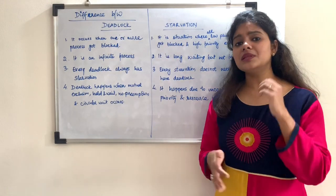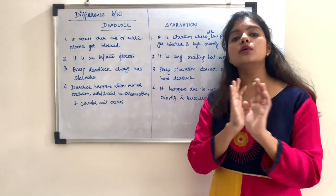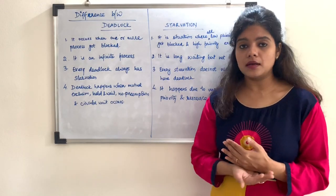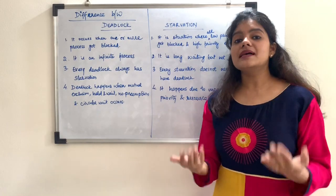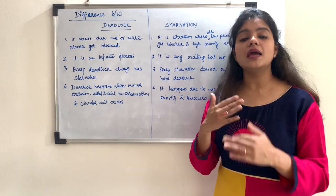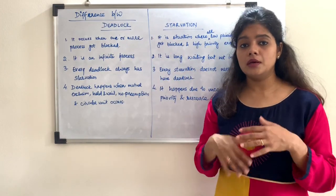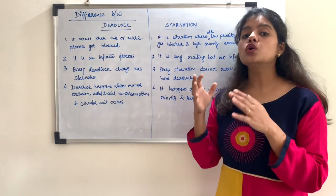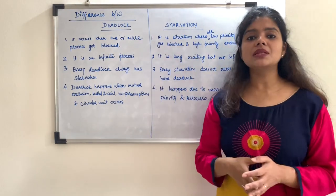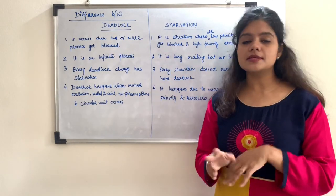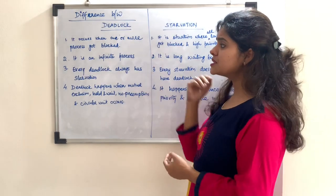In starvation, lower priority tasks are waiting for a very long time. They still have a chance, but it is a very late chance, because higher priority tasks keep on executing. We are using priority as a parameter here, but it is not necessary that every time it is priority — it may depend on other parameters also. For example, in SJF, the main parameter is Shortest Burst Time. So processes with less burst time keep executing, while processes with more burst time are in waiting mode for a very long time — they starve. So the major difference is that in deadlock the system is completely blocked, while in starvation some processes execute and some are waiting for a very long time due to parameters like priority or burst time.